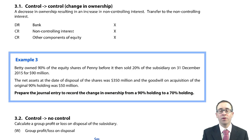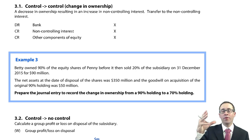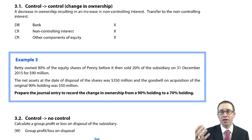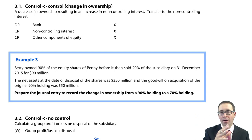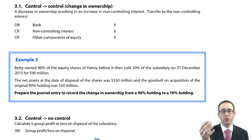So we've gone up the stairs, let's go down the stairs. So we're now up in the realms of control and we decide to sell some shares, but we don't sell enough to cross the accounting boundary. We sell some shares and we're still able to control the subsidiary.